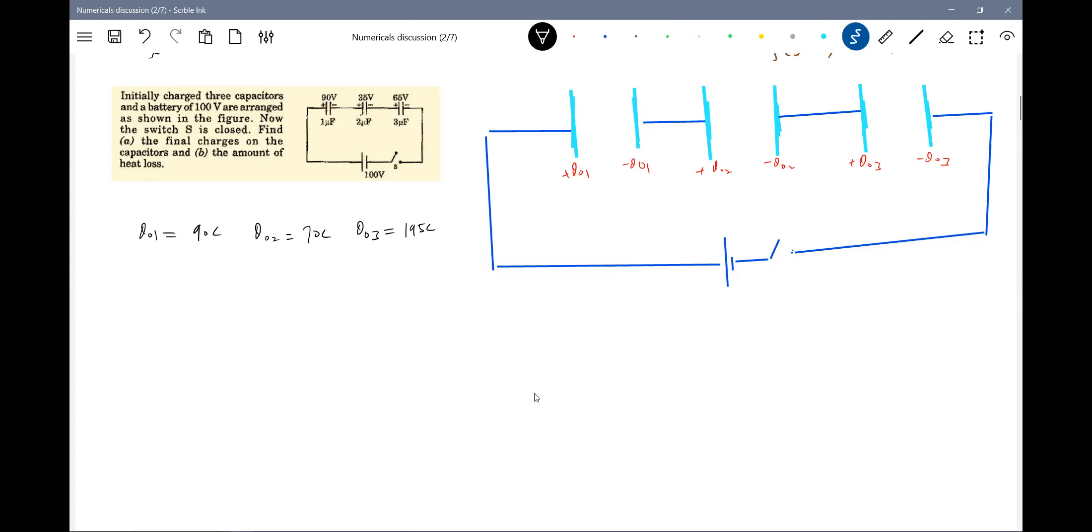Q2 is equal to C into V. Now I'm going to close the switch. So this is the capacitance C1, C2, C3. One Farad, two Farad, three Farad. Now after closing the switch, what will be the conditions?